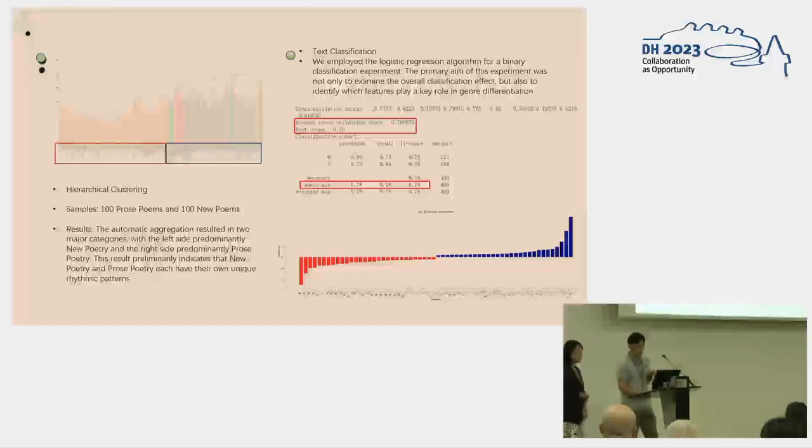We used neo-poems as positive samples, prose poems as negative samples, and conducted a binary classification experiment using a logistic regression model. The model achieved an accuracy of 79% on the validation set and 78% on the test set. Additionally, to uncover which specific features had a significant impact on the model, we viewed the model coefficients. The following image shows the top 60 features with the greatest contribution.